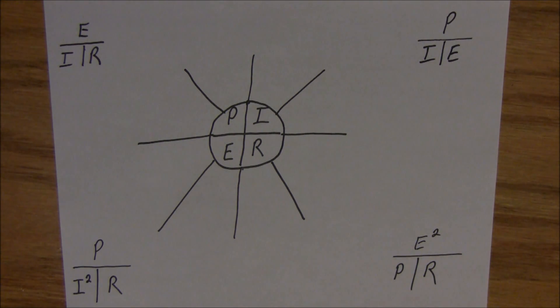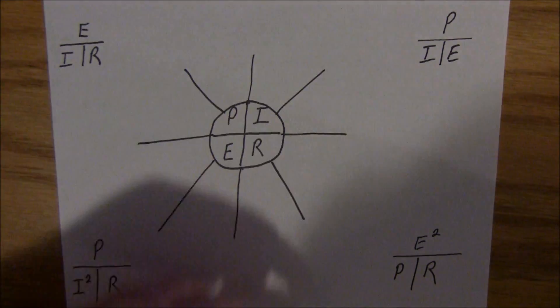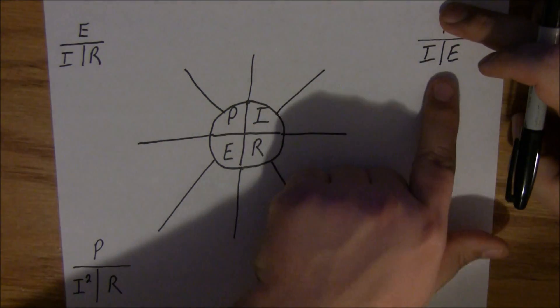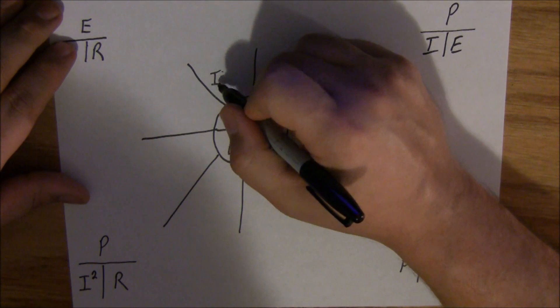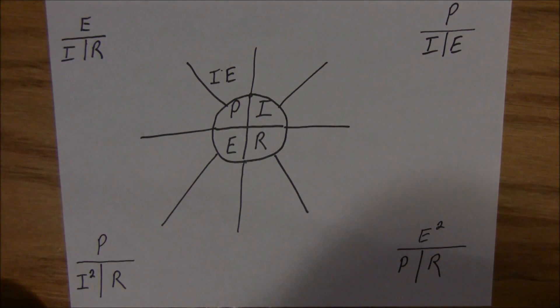So now we can start filling in the blanks. Let's start with power. If you want to find power, you put your finger over the P. So P is equal to I times E. Where else do we have a P?